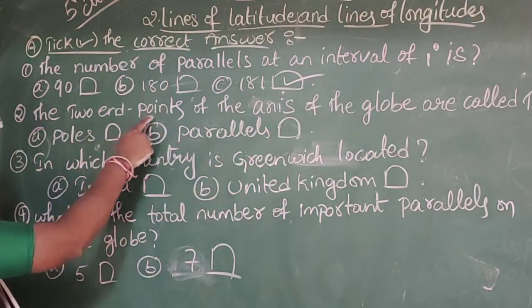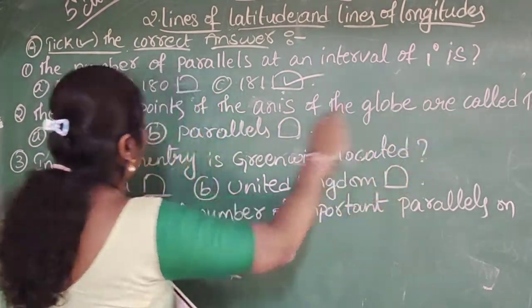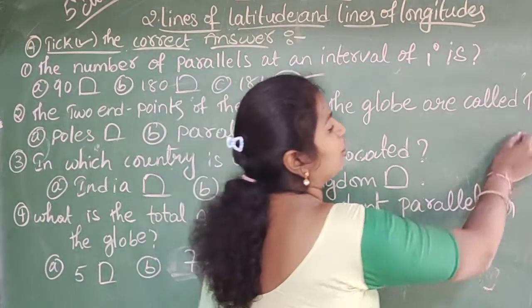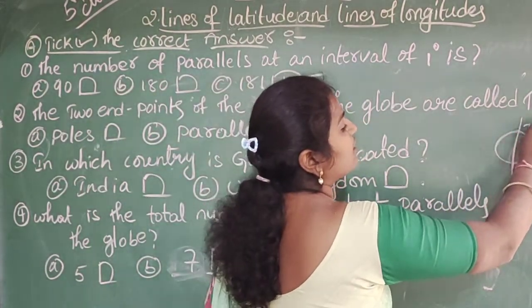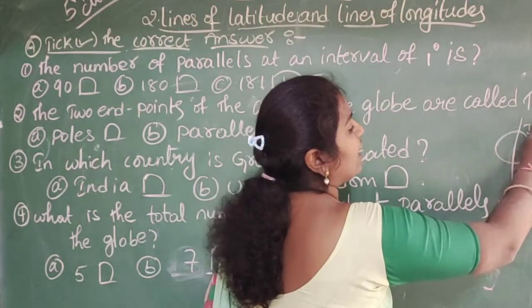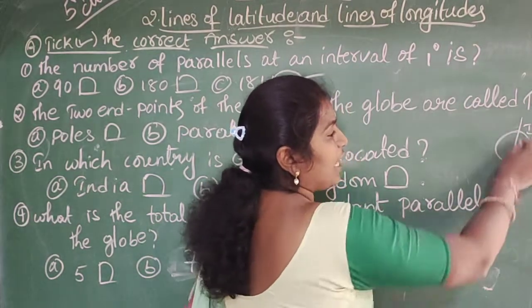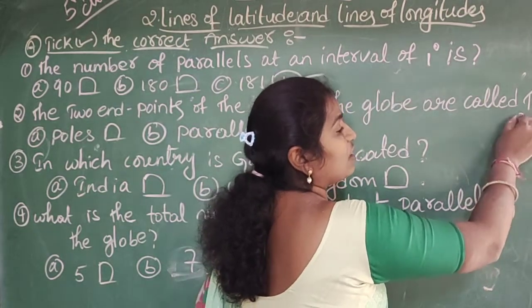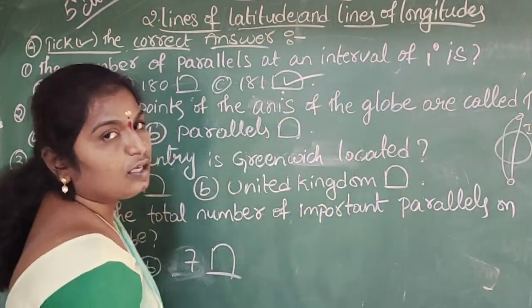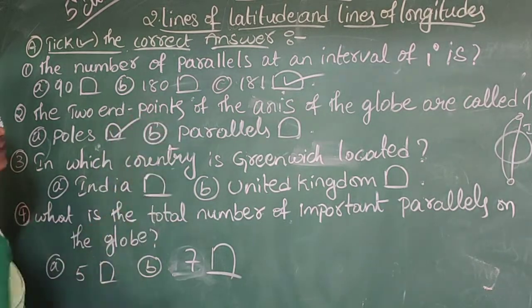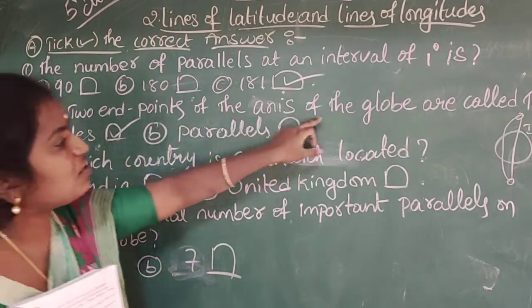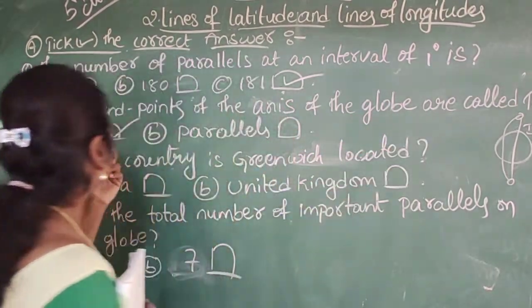Second question: The 2 end points of the axis of the globe are called the? The answer is Poles.